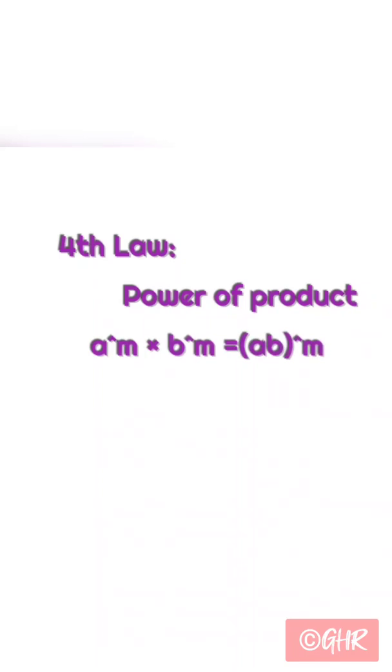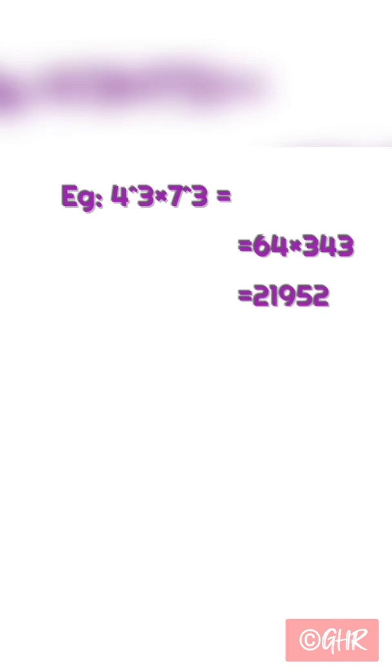Fourth law: power of product. a to the power of m into b to the power of m is equal to a to b whole to the power of m. Example: 4 to the power of 3 into 7 to the power of 3 is equal to 64 into 343, which equals 21,952.